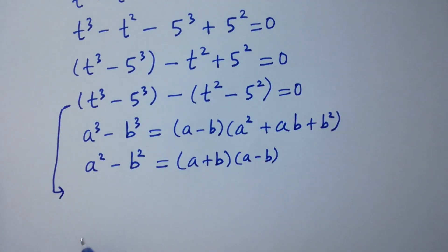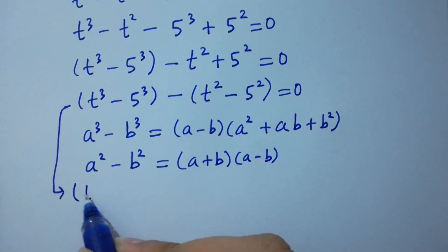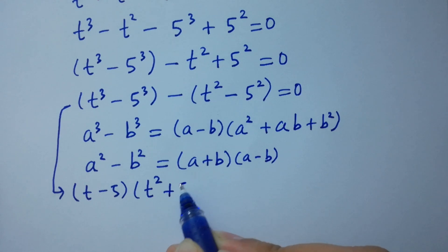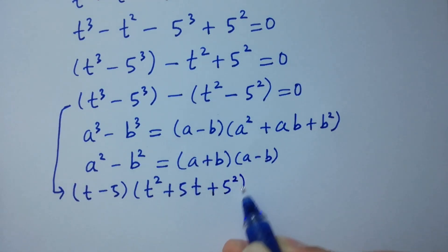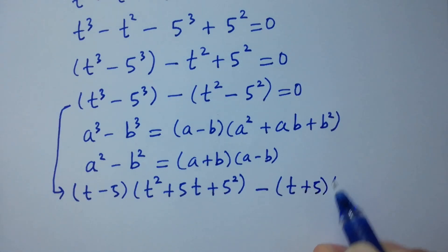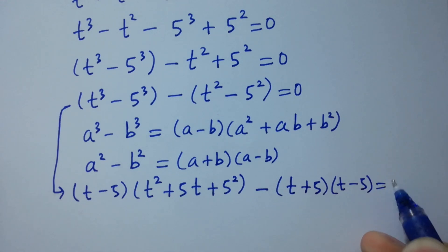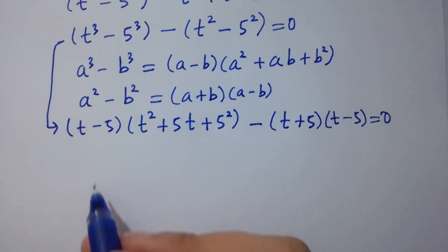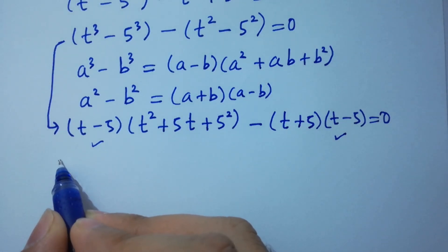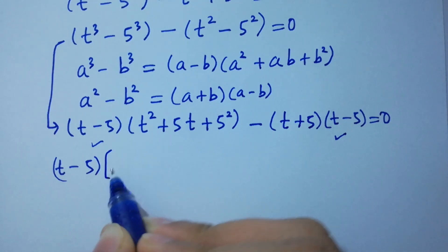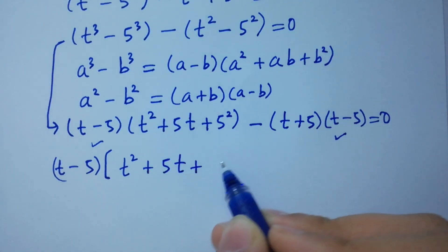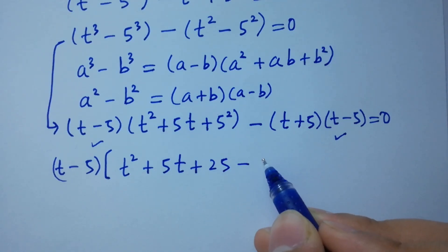Then it will be: applying the difference of cubes to t cubed minus 5 cubed gives (t minus 5), and applying the difference of squares to t squared minus 5 squared gives (t plus 5)(t minus 5). So t minus 5 equals 0, and t minus 5 is a common factor. We have t minus 5 times (t squared plus 5t plus 25 minus (t plus 5)) equals 0.